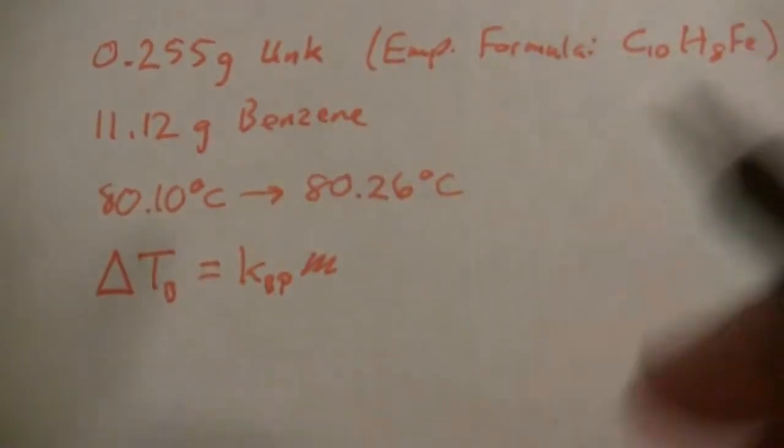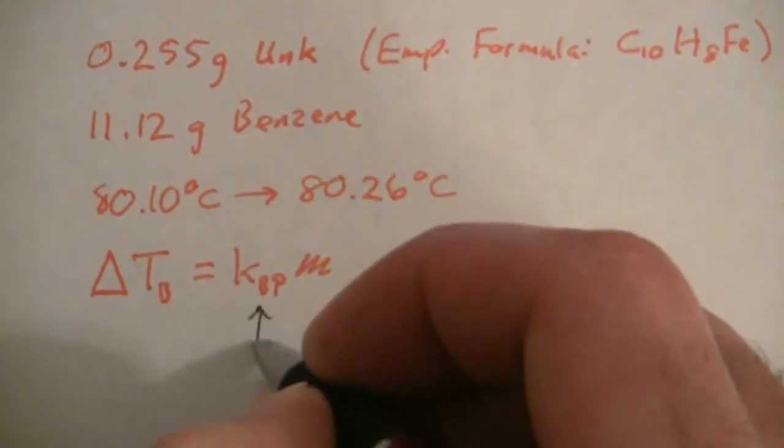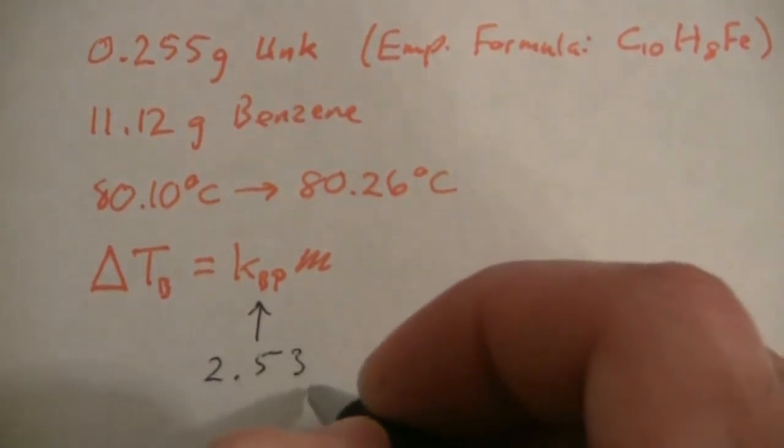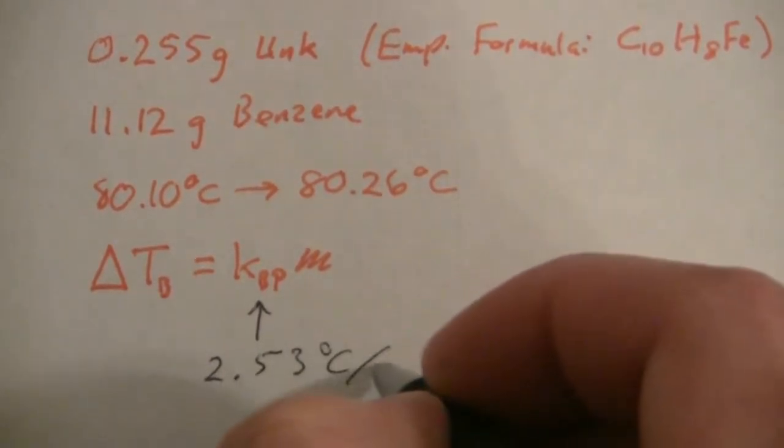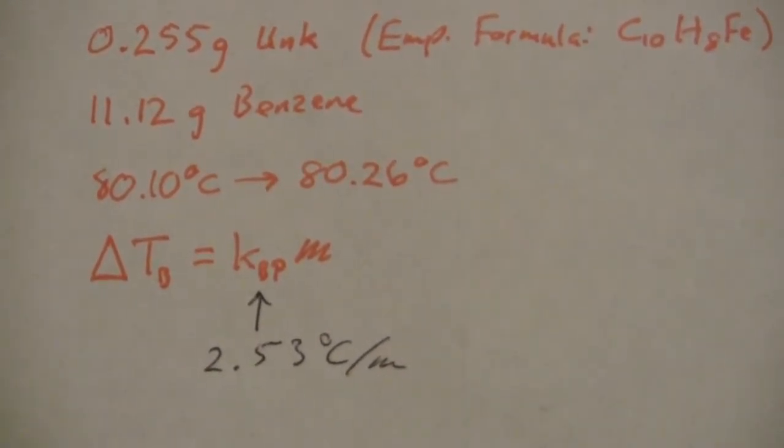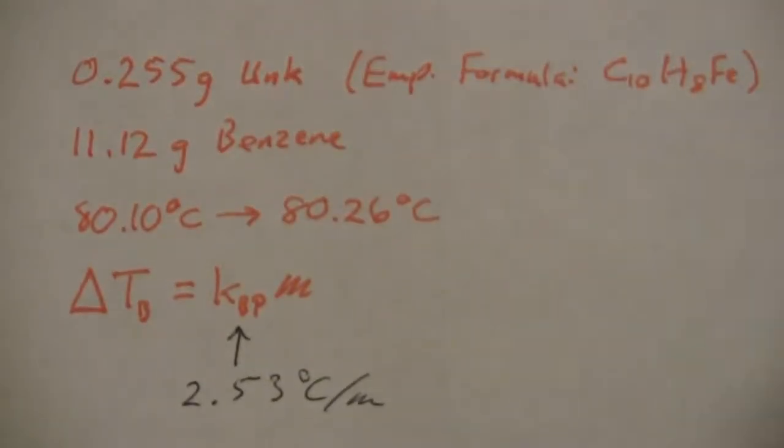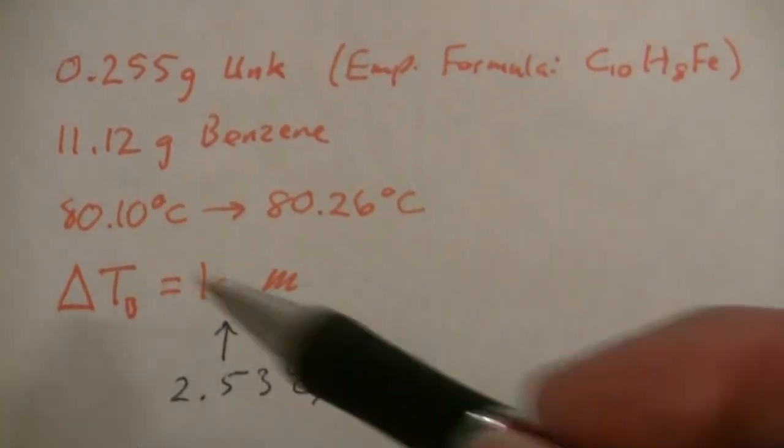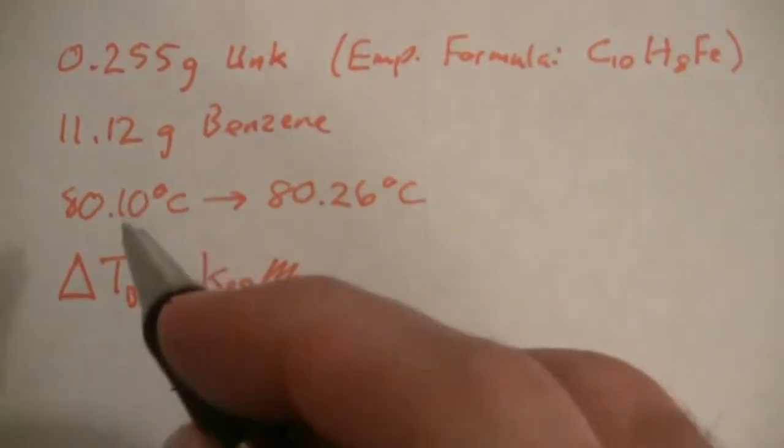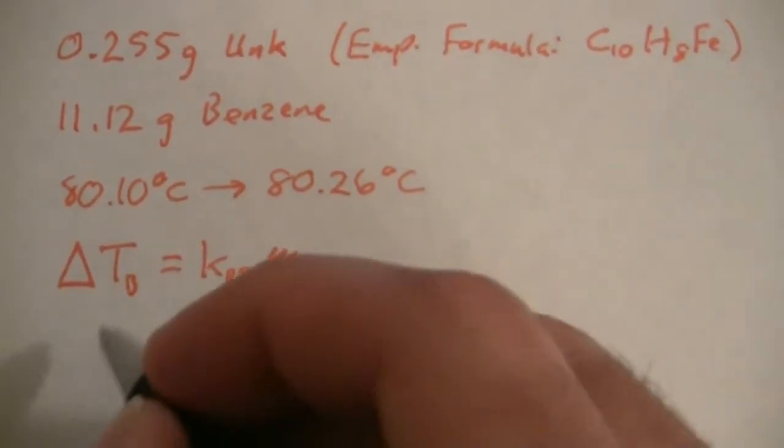So the Kbp is 2.53 degrees C per molal. We have the constant and here is our change in temperature which is going to be 0.16 degrees.